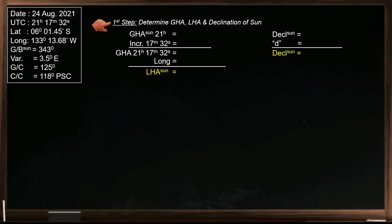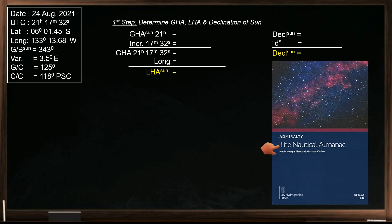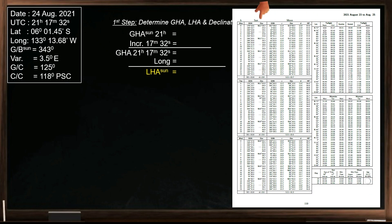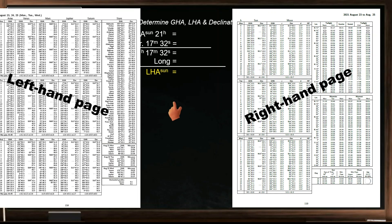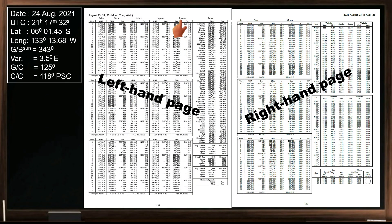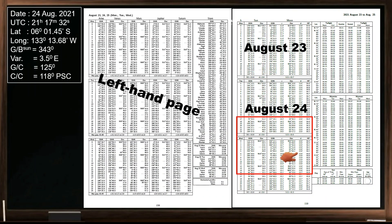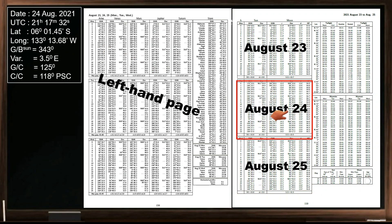Our first step is to determine the GHA, LHA, and declination of the sun. We need a nautical almanac to determine these values, and I will use a 2021 edition. On the daily pages, find August 24th. The data for the sun and moon can be found on the right-hand page, while on the left-hand page are Aries, planets, and selected stars. The daily pages cover three days — August 23rd, 24th, and 25th. The date of observation is August 24th, so it can be found in the middle of the daily page.